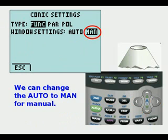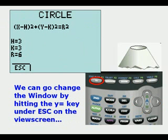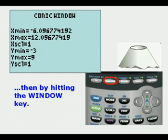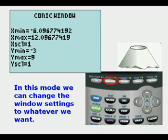And when we do that, we can press the Y equals key to go back to this menu, and then we can press the Window key to get to conic window. In conic window, we can change window settings to whatever we want.